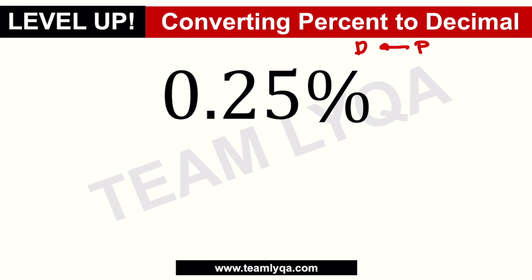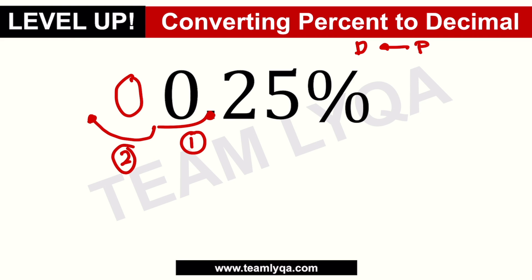The only difference is the decimal isn't at the end — it's already here. So we start from here and move it twice to the left. One — and since there's no number here, you add a zero. Two. So 0.25 percent becomes 0.0025 as a decimal.